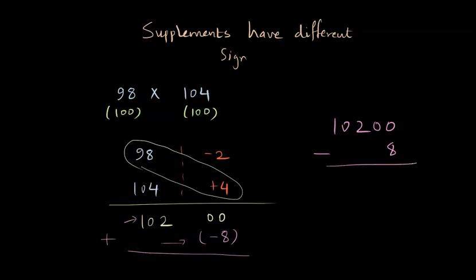Let's do that. 102 with two zeros is basically 10,200 plus minus 8, which is basically minus 8 itself, and the answer that we get here is 10,192. So the multiplication of 98 and 104 is 10,192.